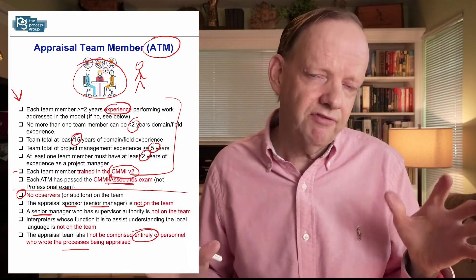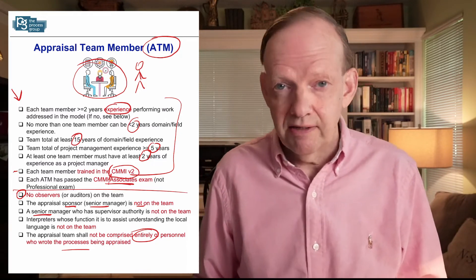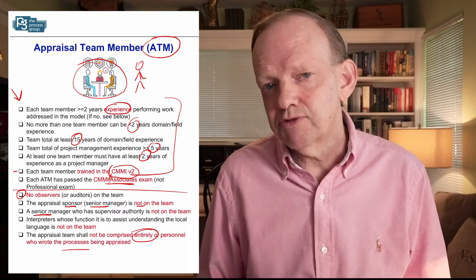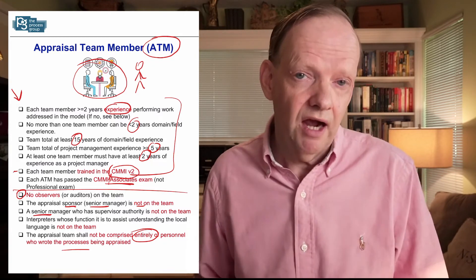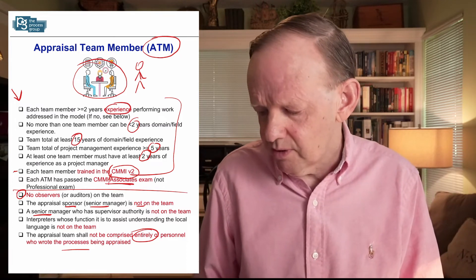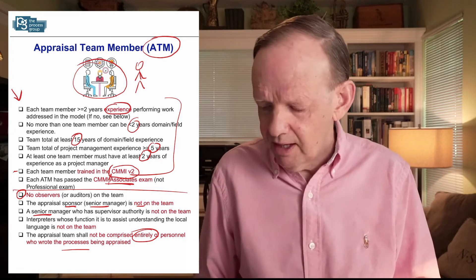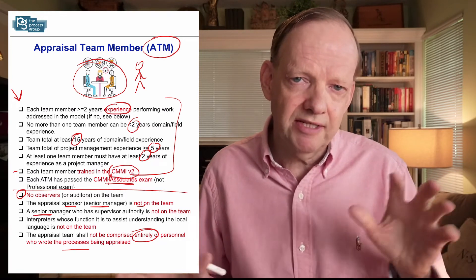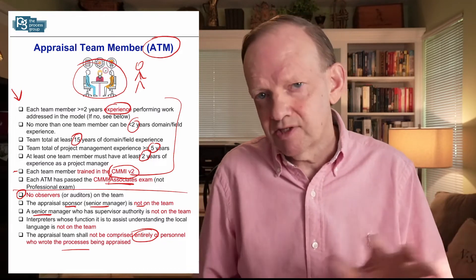We don't want the team to be entirely process owners. If you have process owners on the team, I'd have at least one developer, tester, or service provider to balance it out. Many companies do have process people on the team, and I'm the objective person to mitigate that conflict of interest. I recommend a balance between practitioners and maybe a process person, making a team of three to four people.